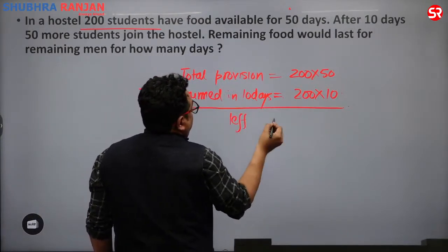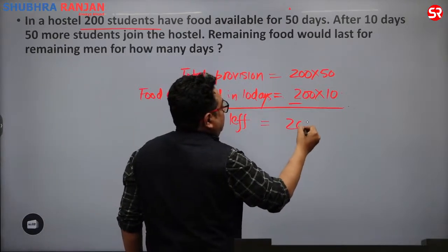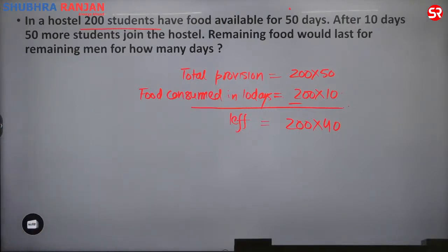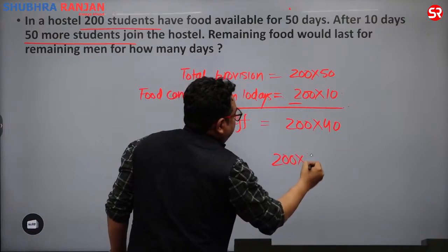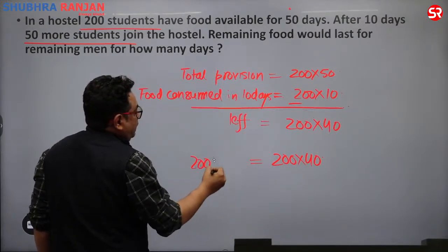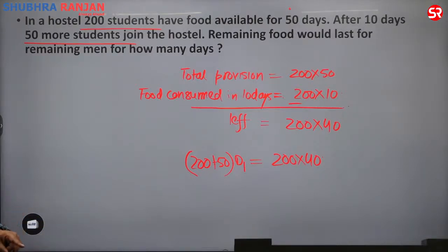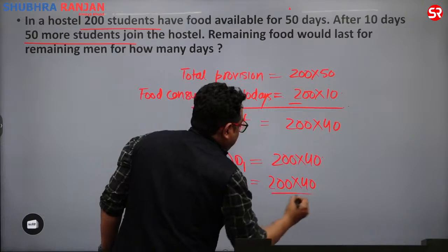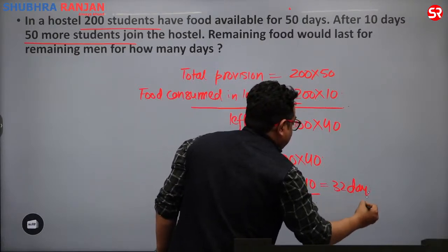This 8000 units of food is to be consumed by 200 plus 50 students, that is 250 students, for D1 days. So D1 equals 200 × 40 / 250, which comes out to be 32 days. The remaining food of 8000 units would last 250 men for 32 days.